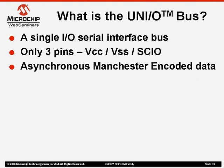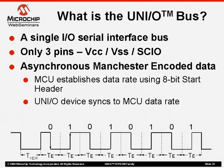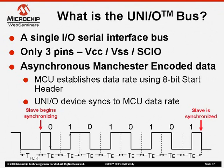In a UniO bus interface, the master will establish the data rate by sending an 8-bit start header at the beginning of all communications, and it is the job of the UniO slave device to sync up to this data rate. An example of an 8-bit start header is shown below. The slave will begin the synchronization step after it sees a low start header pulse, but will synchronize only after 8 consecutive pulses of alternating zeros and ones have been recognized.